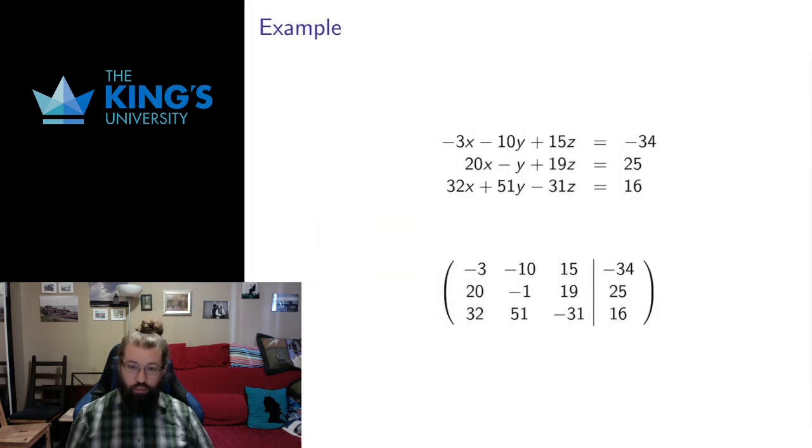Let's do another one. I'll try and write a little bit less over this one, so it doesn't become as obfuscated. So in the first equation, constants are negative 3, negative 10, 15. They show up there. The constant, negative 34, on the other side, the equal sign shows up there. Equal sign again is represented by the vertical line.